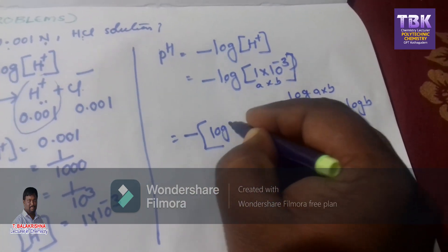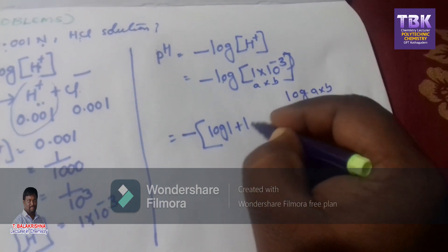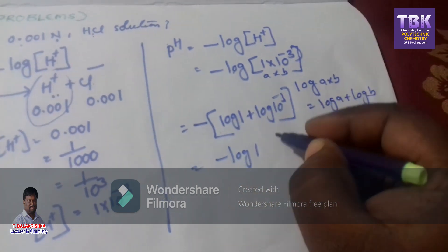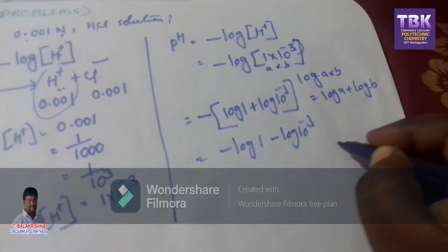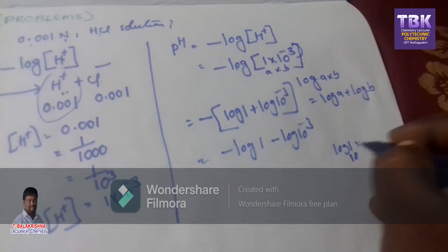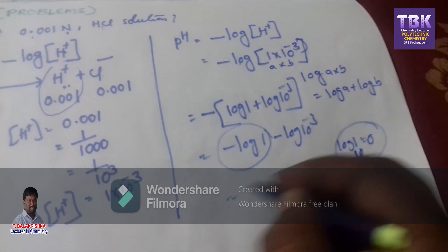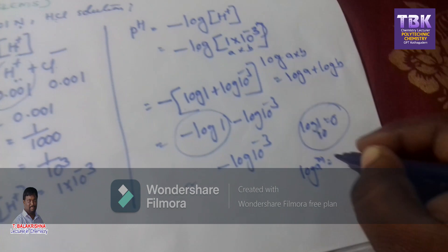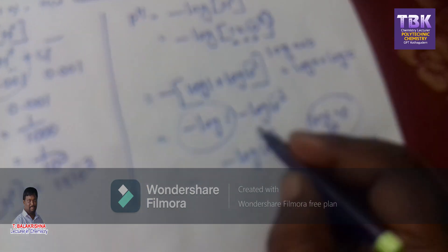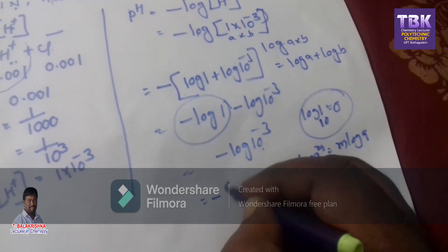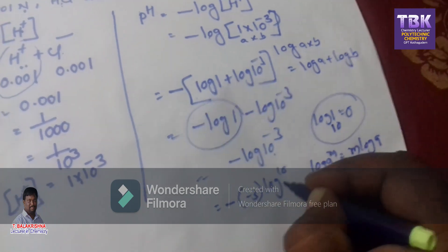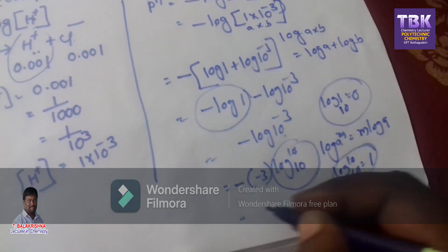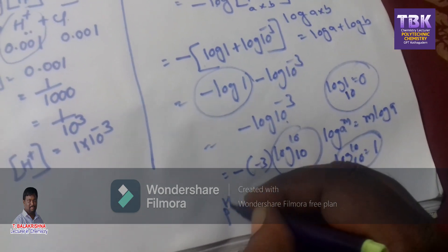Apply log A + log B: log 1 plus log 10⁻³. The log 1 value is 0, so it converts to 0. Then we have minus of log 10⁻³. Applying the formula log aᵐ = m·log a, it becomes minus of (−3 × log 10 base 10). Since log 10 base 10 = 1, minus × minus gives plus 3. The pH of the given solution is 3.